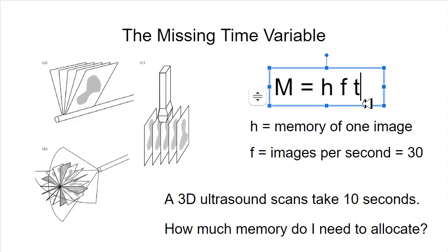If I don't put this measure time into the equation, then I can only calculate the amount of memory I need for a 1 second scan. I cannot allocate the memory for a 10 second scan because I don't have a variable to put that 10 seconds into my computer program.